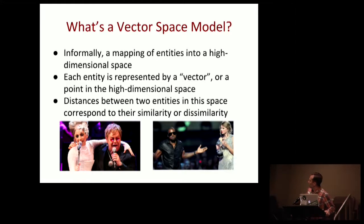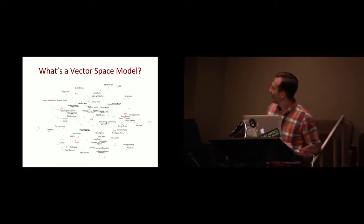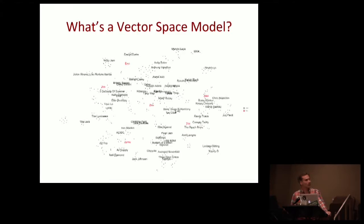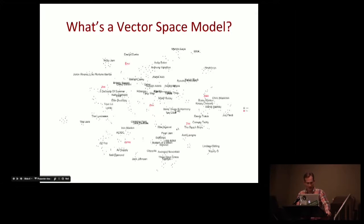At iHeartRadio, the joke we had was that Kanye is in a vector space all his own. This is what the vector space might look like in two dimensions — red points are users, black points are artists. This is the typical collaborative filtering matrix factorization most streaming apps use. You can see me down here, somehow placed near Beach Boys and Avril Lavigne, and Robby put himself by David Guetta.